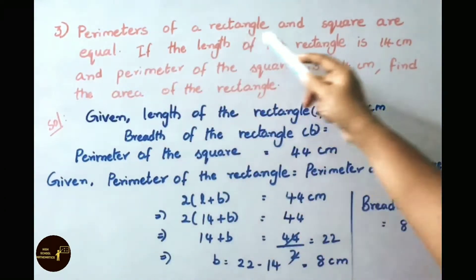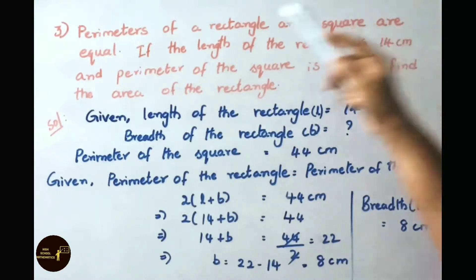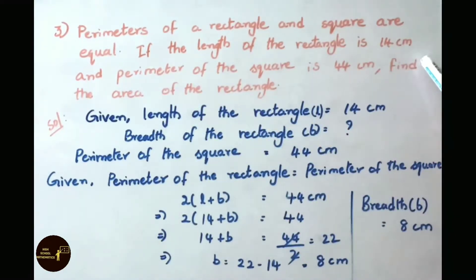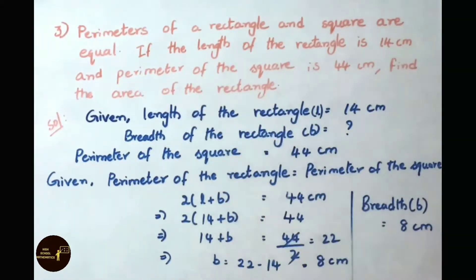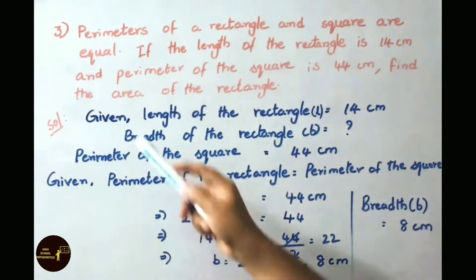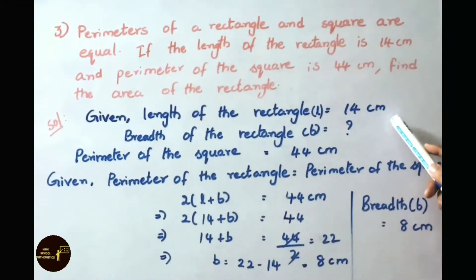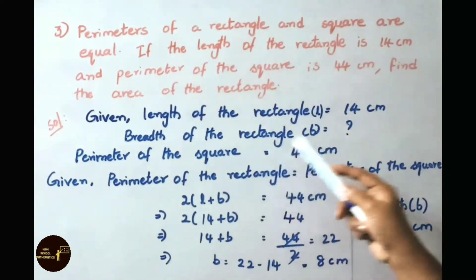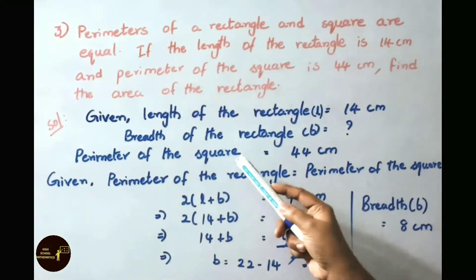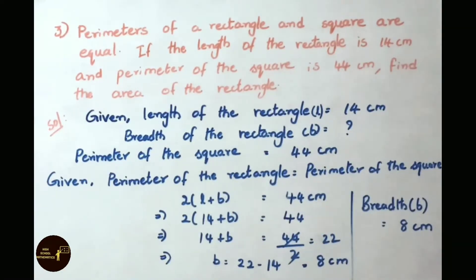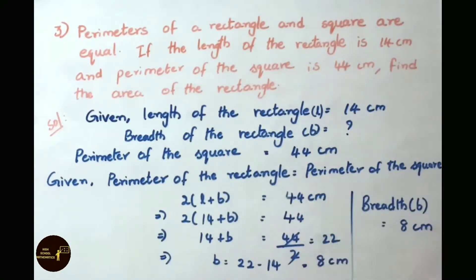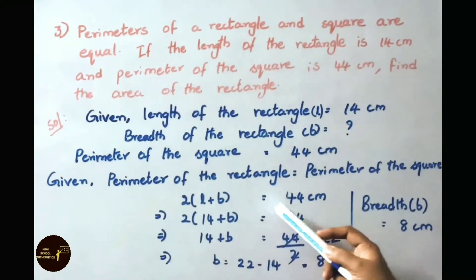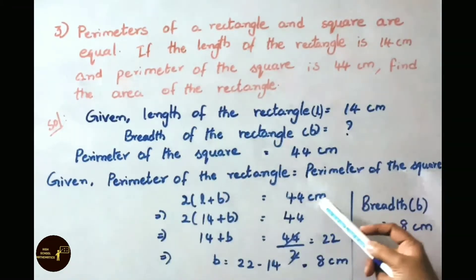Let us see question number 3. Perimeters of a rectangle and a square are equal. If the length of the rectangle is 14 cm and perimeter of the square is 44 cm, find the area of the rectangle. Given: length of the rectangle L equals 14 cm. Breadth B is unknown. Perimeter of the square is 44 cm, and perimeter of the rectangle equals perimeter of the square.